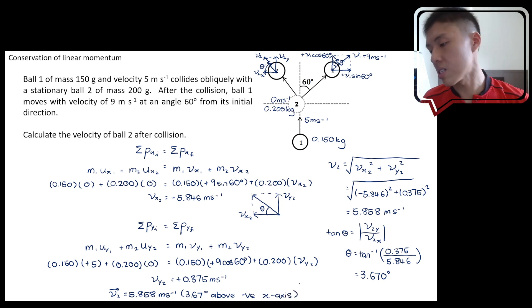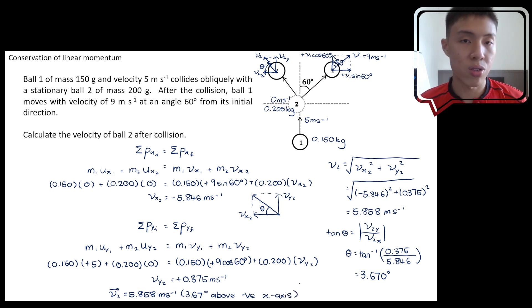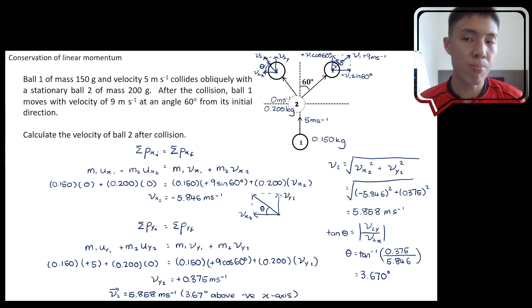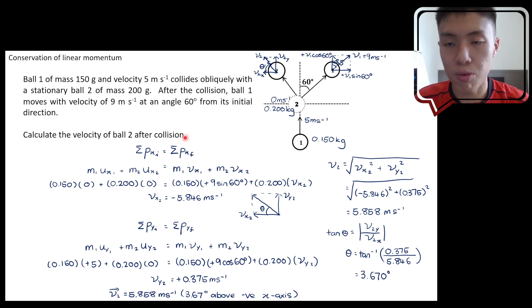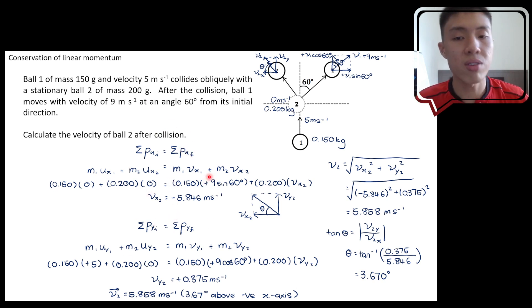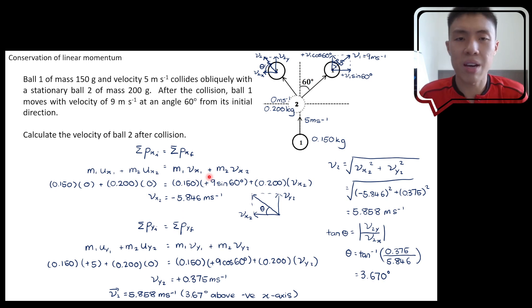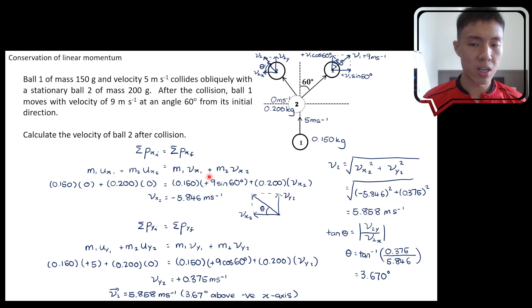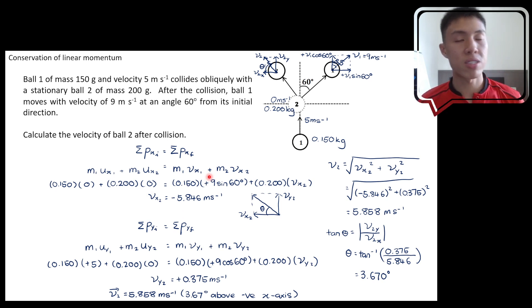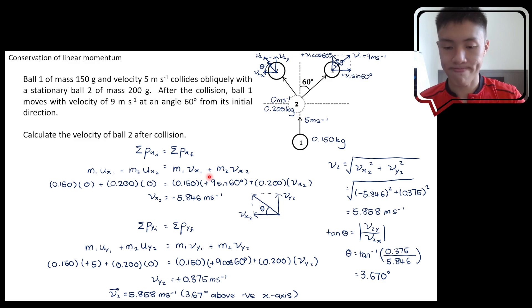So the final answer is: v2 ≈ 5.858 m/s at 3.67 degrees above the negative x-axis. This is a conservation of linear momentum question. By conserving x-momentum and y-momentum separately and equating initial and final values, we can solve for all unknowns. Following the steps systematically makes the question quite manageable.